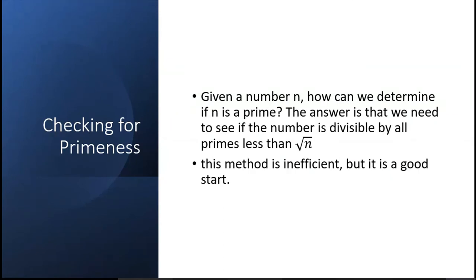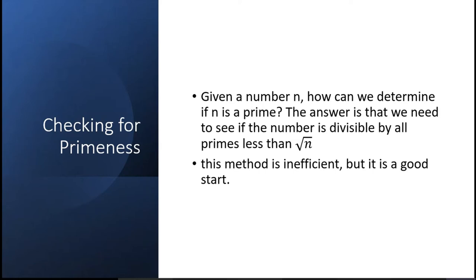For checking primality, there are many methods. One very basic method: given a number n, to determine if n is prime, we need to check if the number is divisible by all primes less than √n. You have done this in C programming. This method is insufficient for very big numbers — it fails in some special cases.